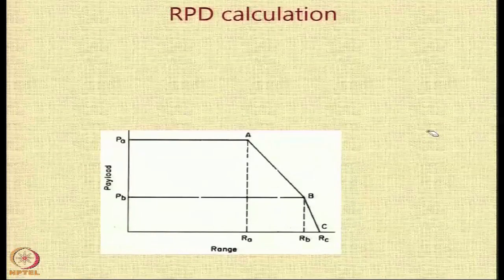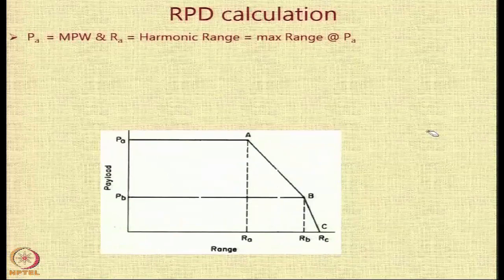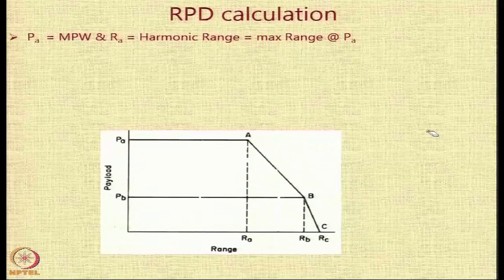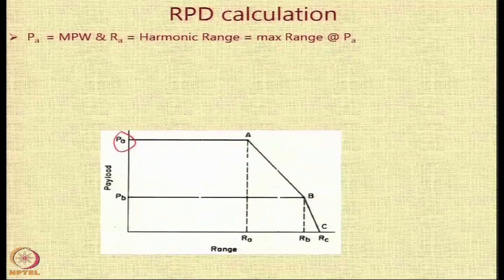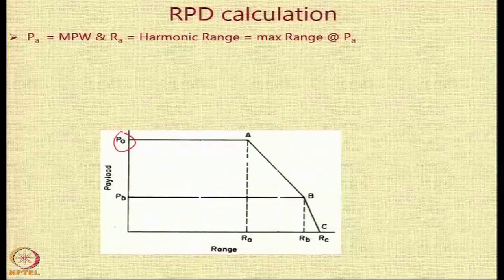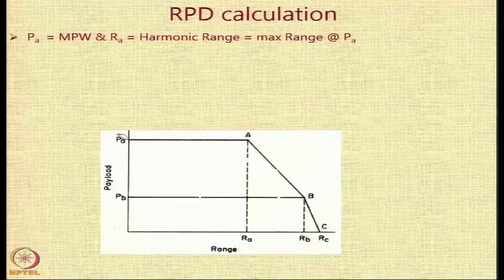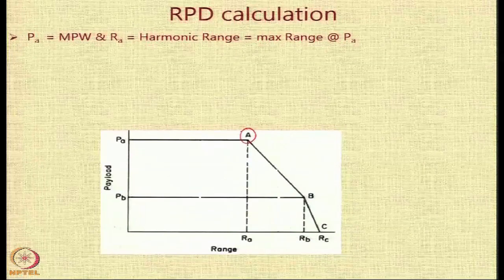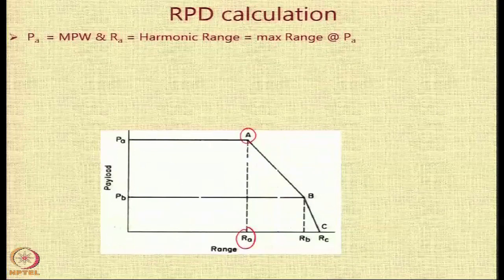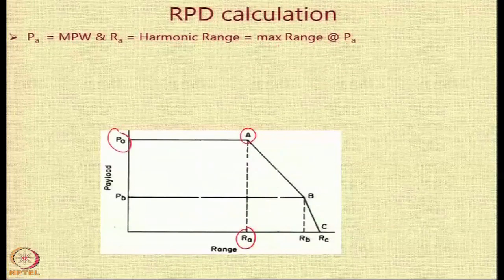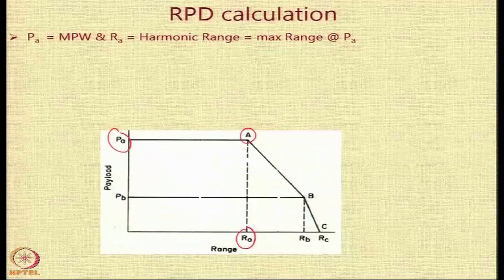The RPD — range payload diagram — calculation involves three or four important points. The first point of importance is point PA. PA stands for maximum payload weight, and A is the harmonic point. The range RA is the harmonic range, which is the range achievable at maximum payload.